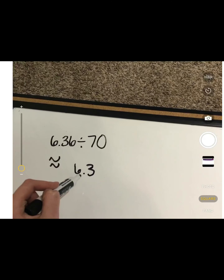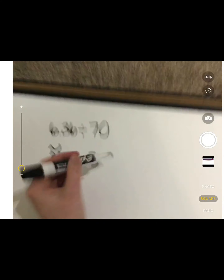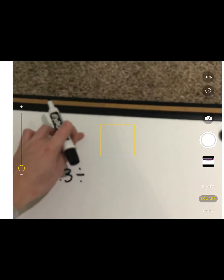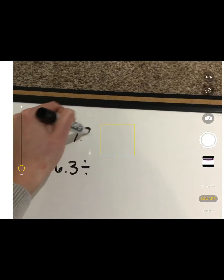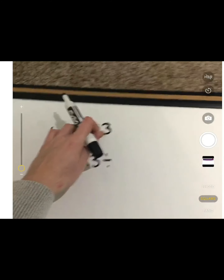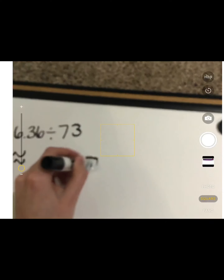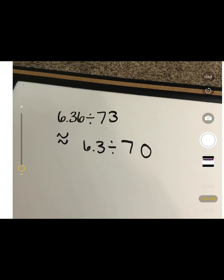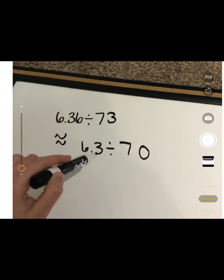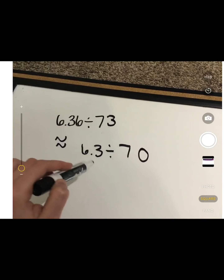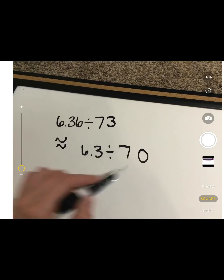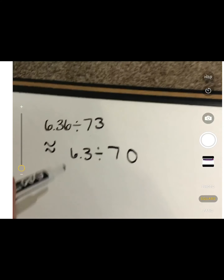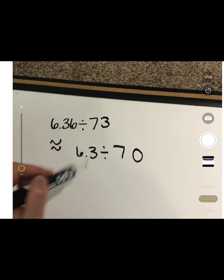So now I have 70 — this should be 73, so that would round to 70 because that is an easier number to work with. Going back to what I just said, I made this 6.3 and I made this 70 because I know that 63 and 70 have a factor in common. Those are much easier numbers to work with. That is how I use these numbers to estimate.